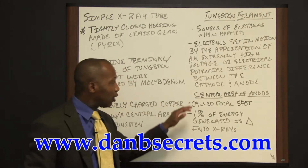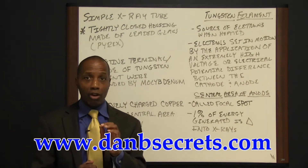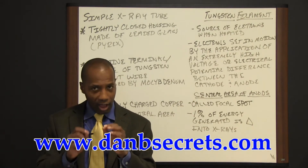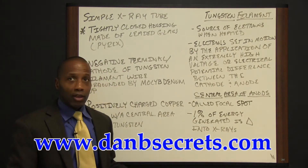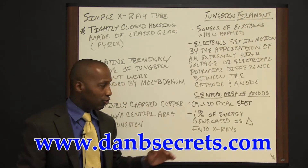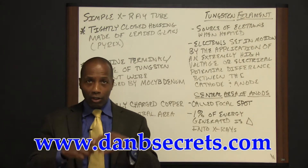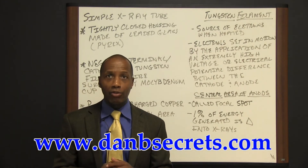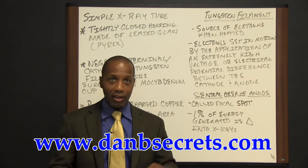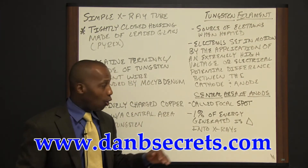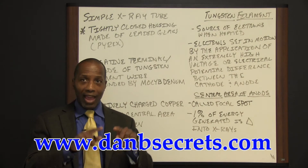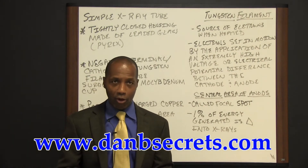The central area of the anode is called the focal spot. At the focal spot, usually about one percent of the energy generated is changed into x-rays, with the remainder dissipated as heat production or infrared radiation in the outer portions of the anode.